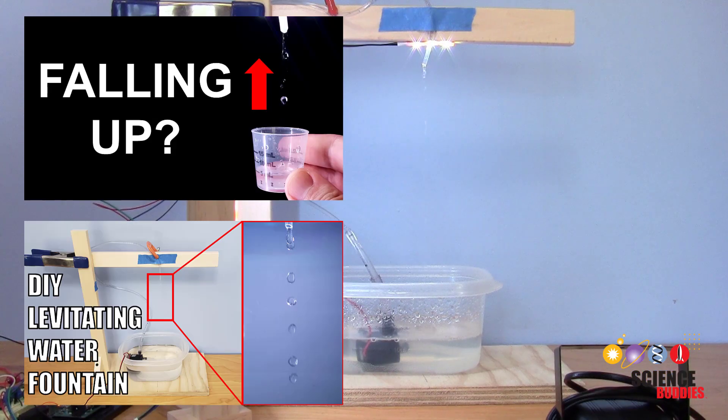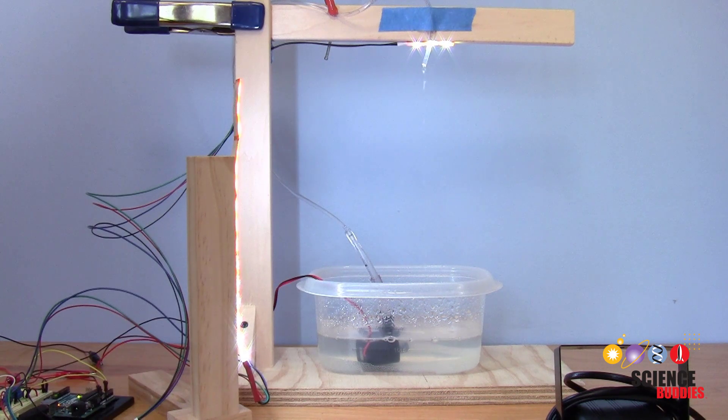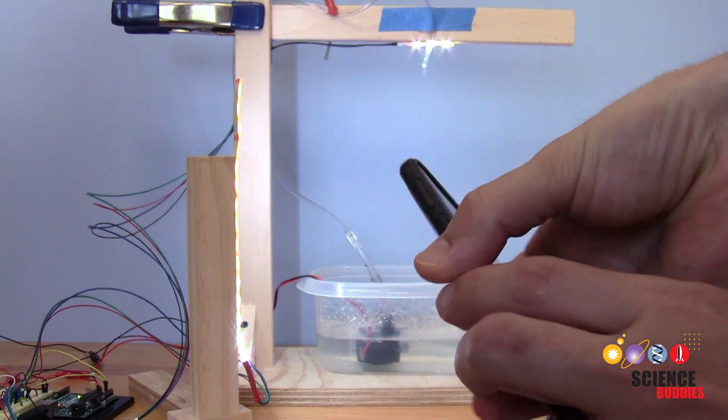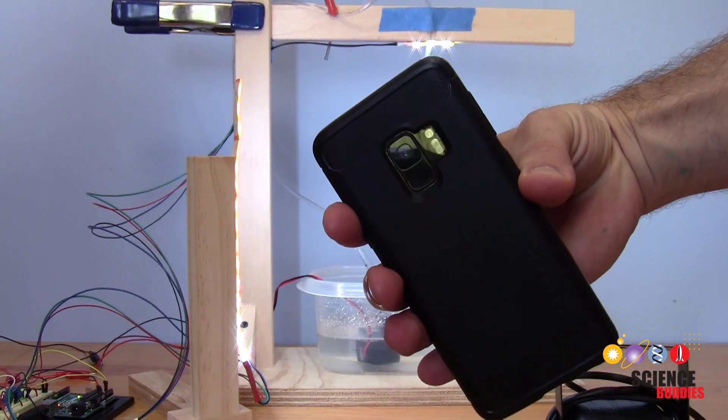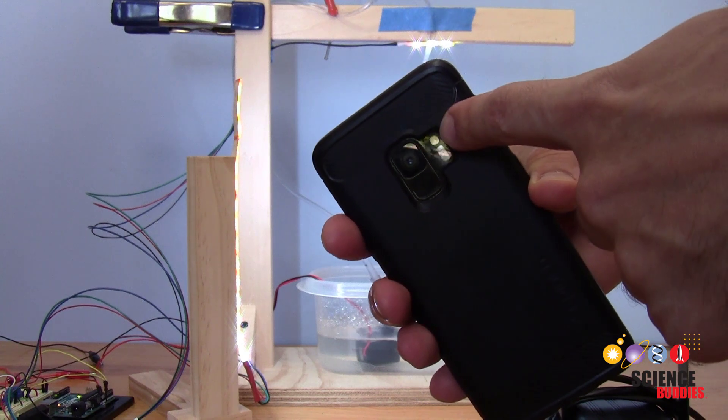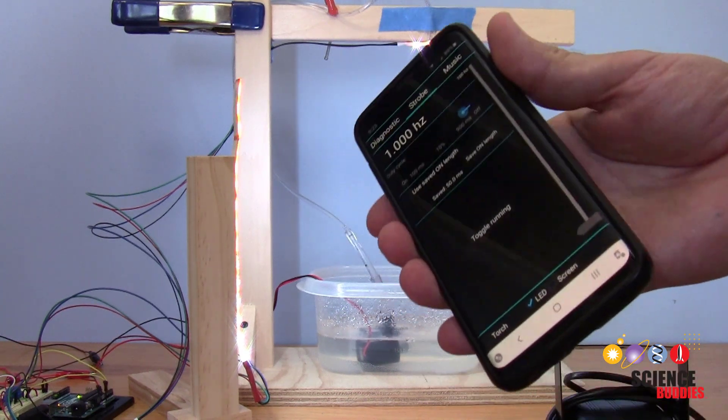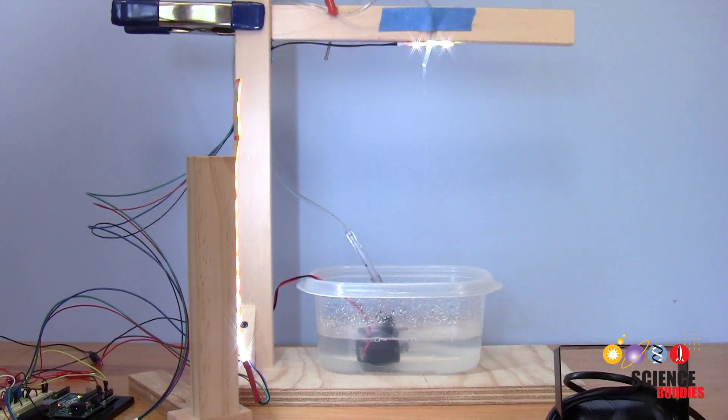We have a couple previous videos that you can find linked in the description of this one where we show you how this illusion works and how you can build your own fountain. In those videos we have you use a strobe light app on your phone because it's easy and convenient. However, the single LED from your camera flash is really not that bright. It works if you just want to demonstrate the effect, but if you really want to show off or make your own video of the effect, you need a lot more LEDs.